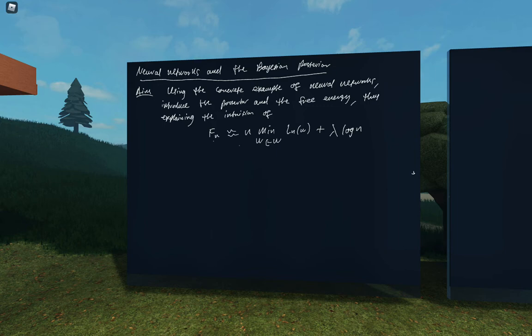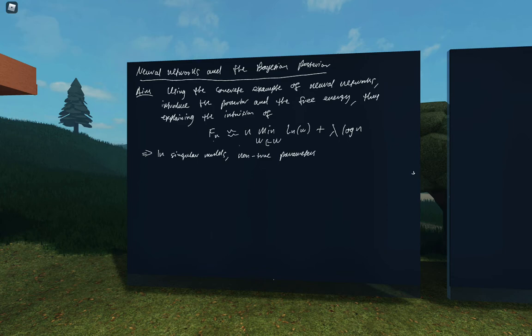The formula is: free energy equals n times the minimum negative log loss, plus the RLCT times log n. Our aim will be to explain this formula with the plots already up on the board, which I spent a long time on for my thesis. The upshot will be that in singular models, non-true parameters can nonetheless be preferred by the posterior.